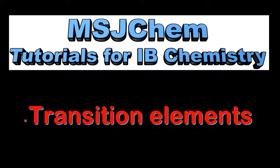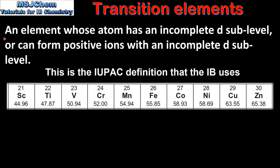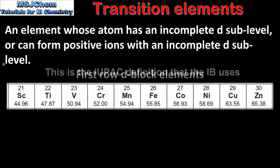This is MSJChem. In this video I'll be looking at the transition elements. A transition element is an element whose atom has an incomplete D sublevel, or can form positive ions with an incomplete D sublevel.